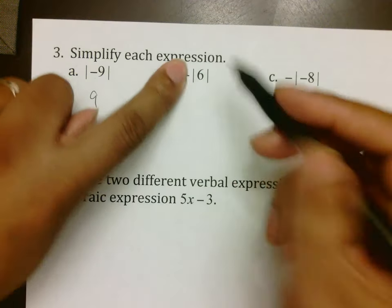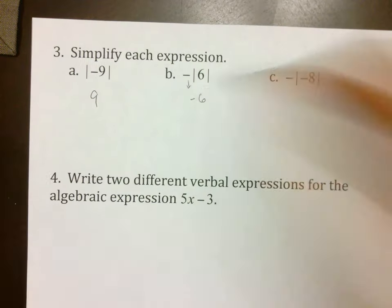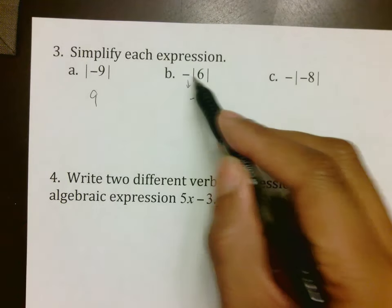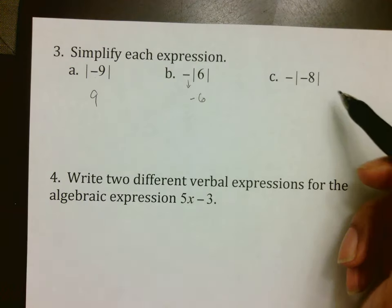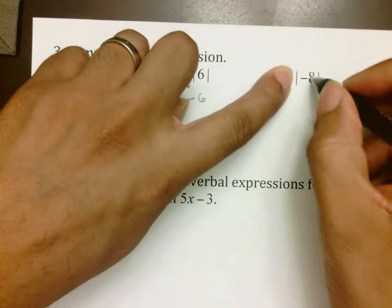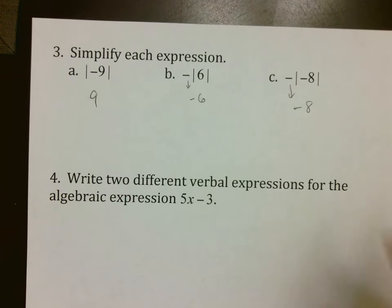So whenever you have this, the absolute value of 6 is 6, but this negative comes down with it. So the answer to this would be negative 6. Just like here, ignore the negative. The absolute value of negative 8 is 8. But this negative comes down with it, making your answer negative 8.